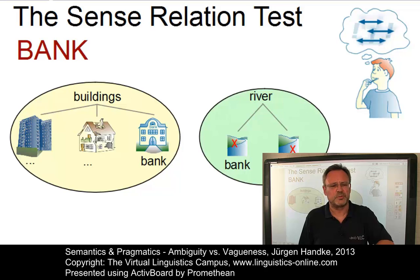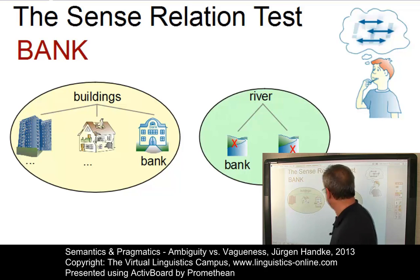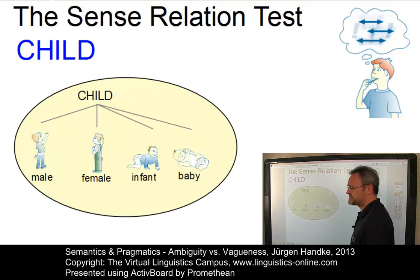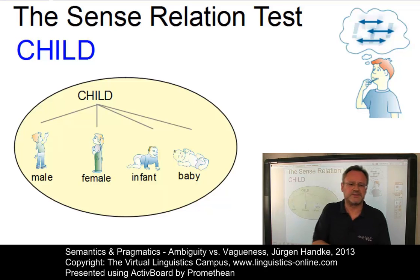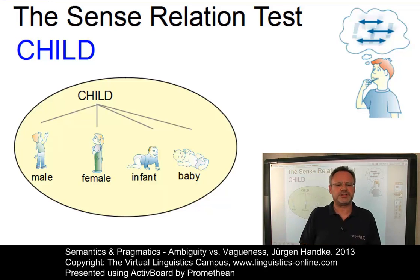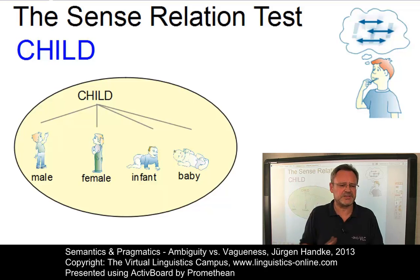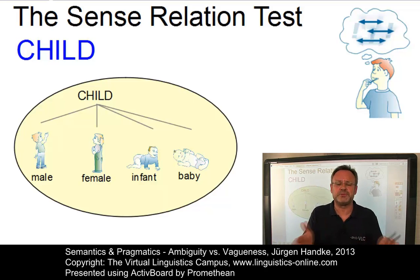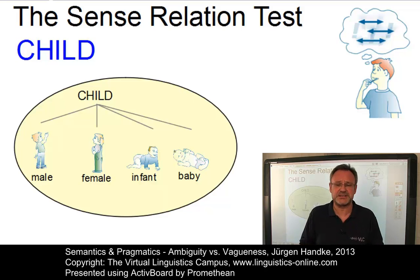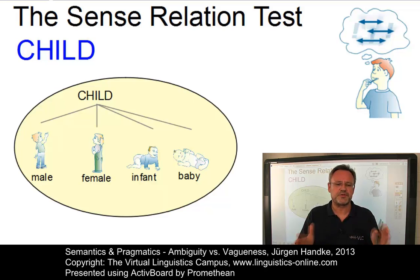This is different with 'child' and its interpretations. The different interpretations of 'child' — boy, girl, infant, baby and so on — are all part of the same hyponymy network. So we have a case of vagueness, in this case referential vagueness. All interpretations refer to a common hyperonym.